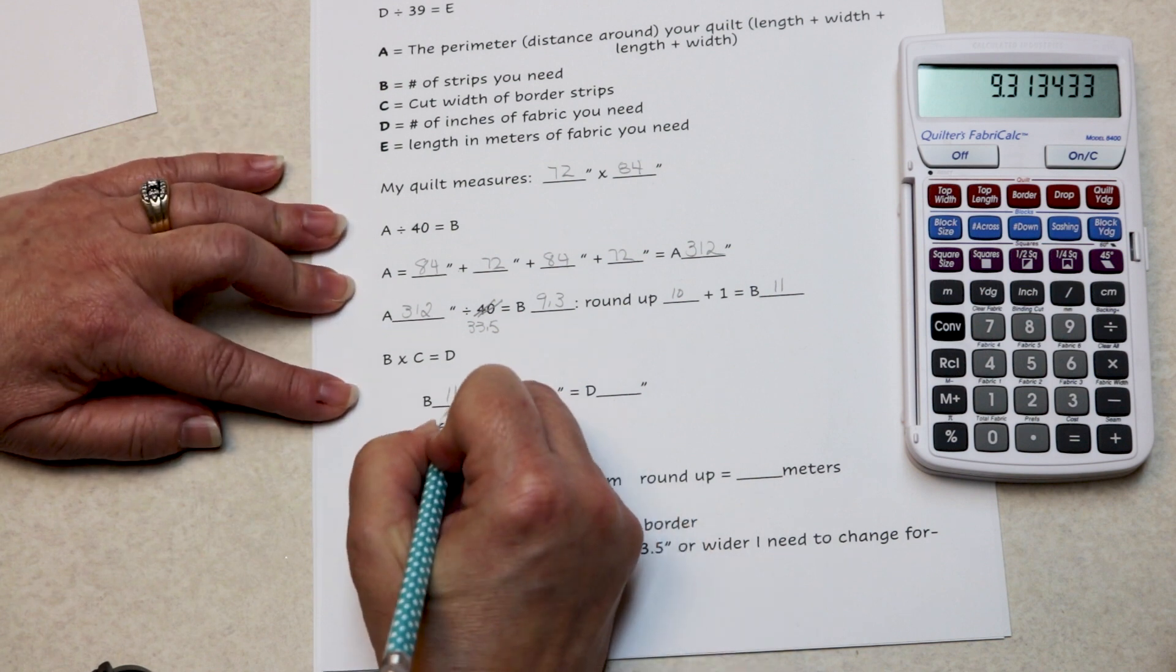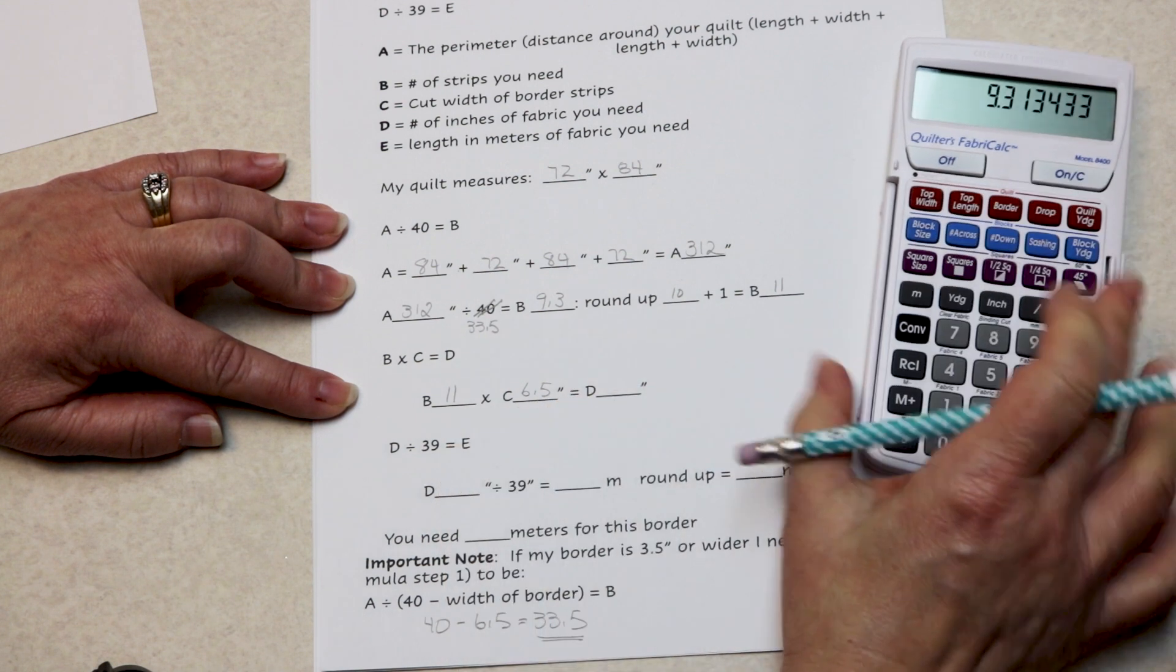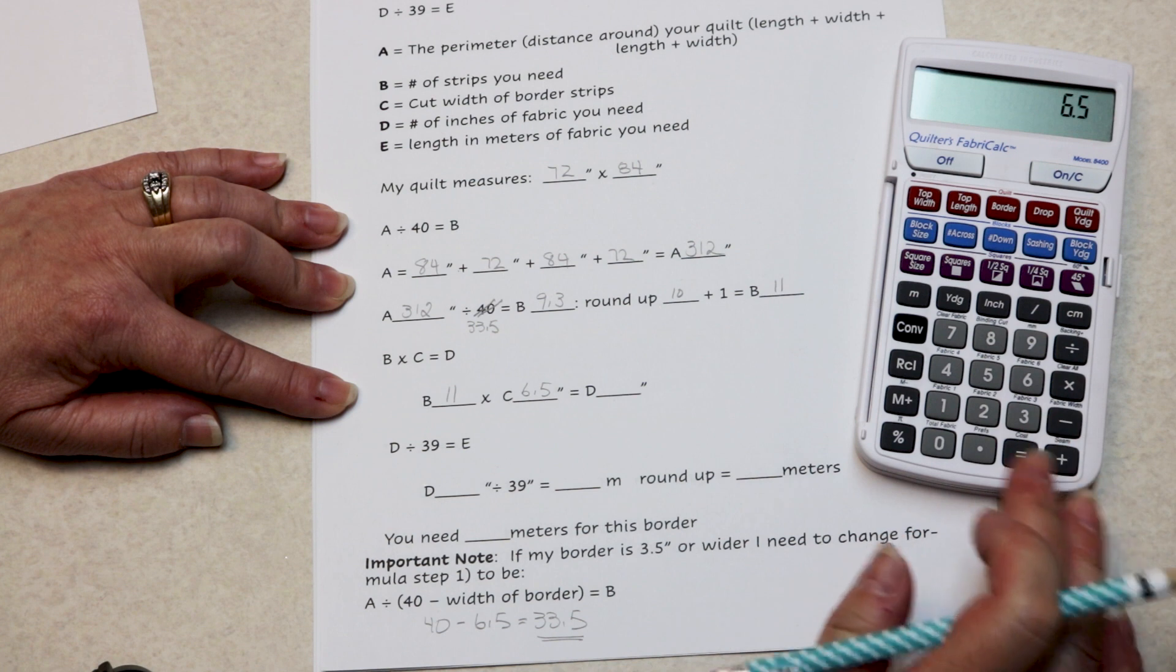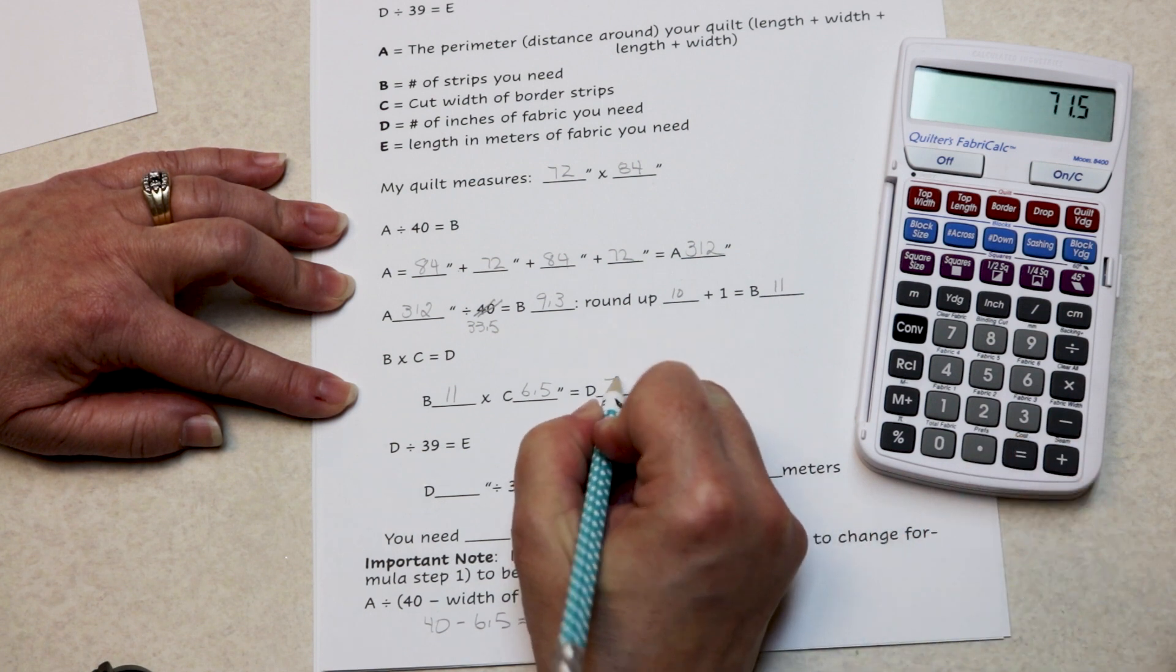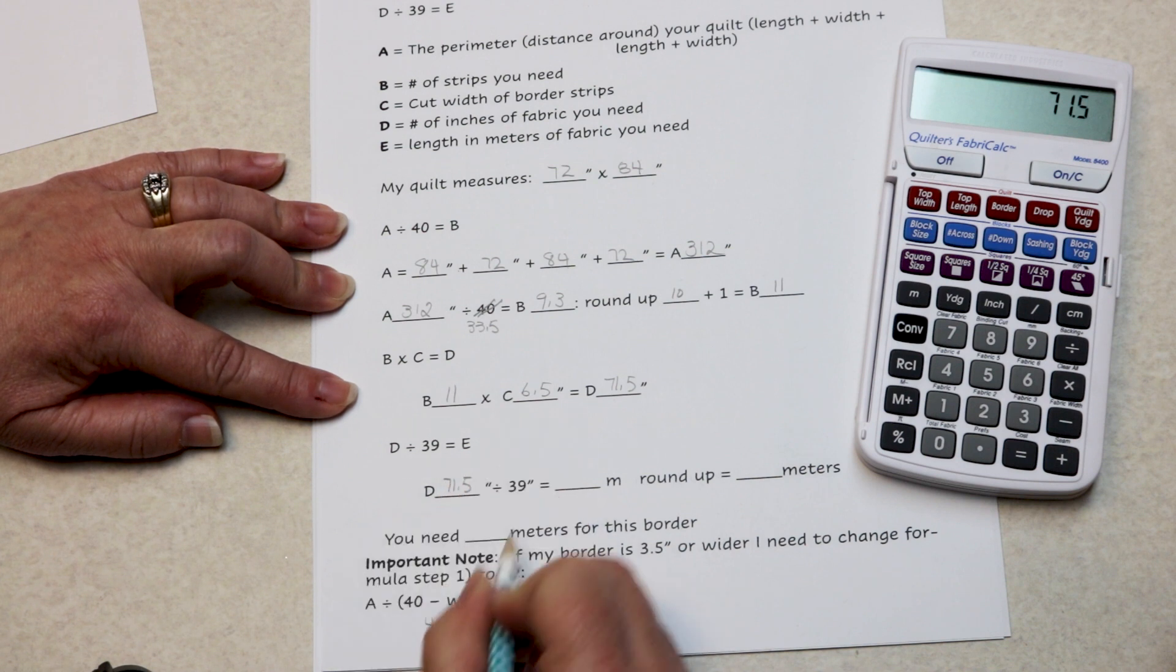11 strips times my cut, which is 6.5 inches. 11 times 6.5 is 71 and a half inches. I need 71 and a half inches.